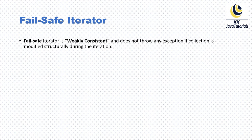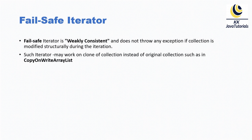Now let's understand what a fail-safe iterator is. A fail-safe iterator is weakly consistent and does not throw any exception if the collection is modified structurally during iteration. When you get the iterator from the underlying collection and while iterating you do a structural modification — adding or removing any element — this will not throw any ConcurrentModificationException.